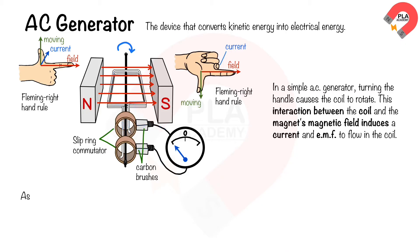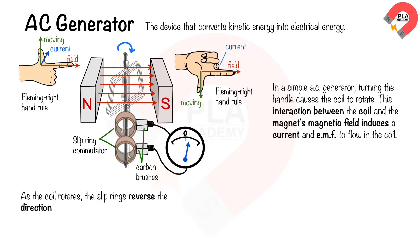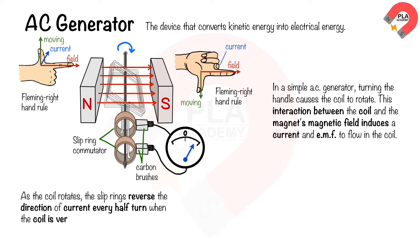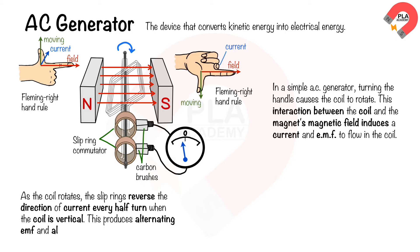As the coil rotates, the carbon brushes are at rest. The slip rings reverse the direction of current every half turn when the coil is vertical. This produces alternating EMF and alternating current, the defining characteristics of AC electricity.